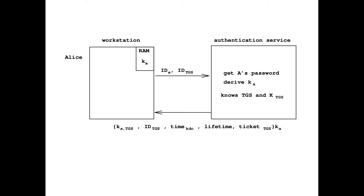The reply consists of: a session key K(A,TGS) for Alice to use with the ticket-granting service; the identity of the TGS; the current time; a lifetime — so this key expires, for instance, at the end of the day, meaning Alice does this once a day; and a ticket for the ticket-granting service that Alice is trusted to pass on to the TGS.